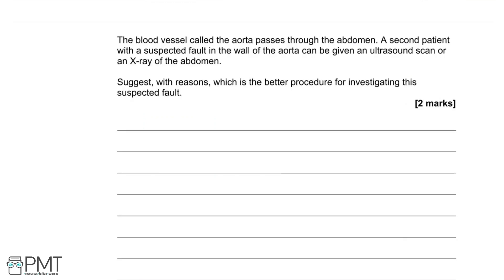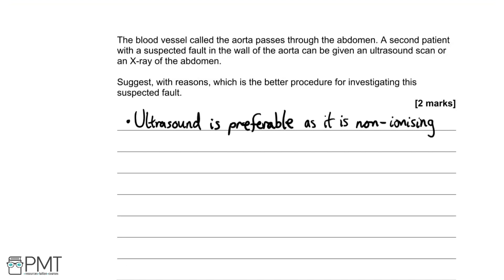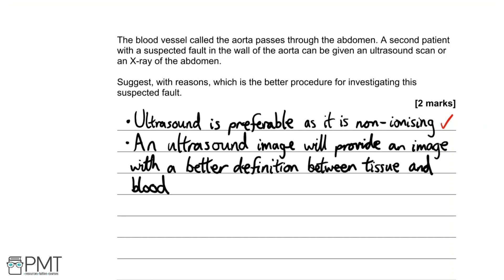The blood vessel called the aorta passes through the abdomen. A patient with a suspected fault in the wall of the aorta can be given an ultrasound scan or an x-ray of the abdomen. The better procedure is ultrasound because it is non-ionizing radiation. Additionally, x-rays are only really good with bone — it's tricky to distinguish between tissue and blood with x-rays, so ultrasound would be better. Two marks.